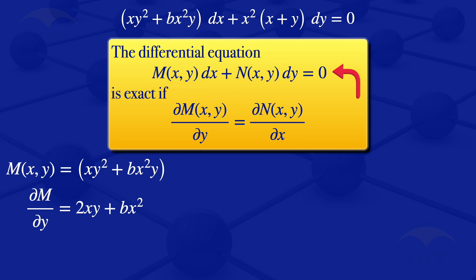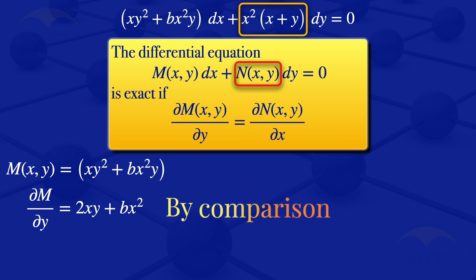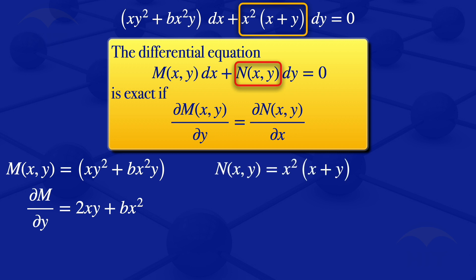Now looking at this equation again, but looking at the coefficient of dy. The coefficient of dy is N(x,y). In this equation, the coefficient of dy is x² multiplied by (x + y). By comparison, our N = x²(x + y).